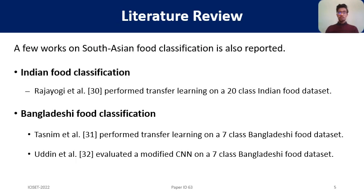There are a few works closely related to our paper. The first is by Praja Yogi and the team, who performed Indian food classification with transfer learning on a 20-class Indian food dataset. The second is by Tasnim and the team, who performed transfer learning on a 7-class Bangladeshi food dataset. The third is by Uddin and the team, who evaluated a modified CNN on a 7-class Bangladeshi food dataset.